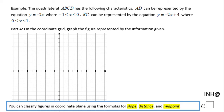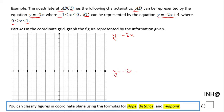Welcome or welcome back. In this example we have a quadrilateral ABCD defined by two linear equations. Segment AD is defined by y equals negative 2x, with x from negative 1 to 0, and segment BC is represented by y equals negative 2x plus 4, with x from 0 to 1. The first thing I'm going to do is use these two equations to identify the endpoints of segments AD and BC.